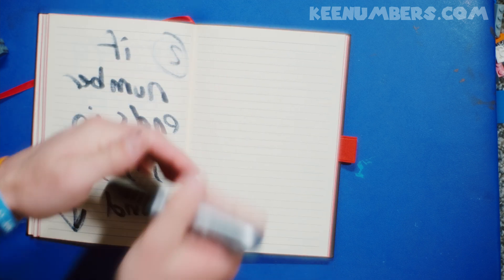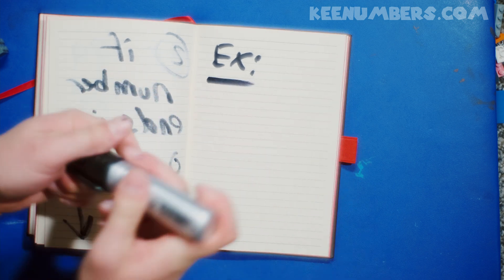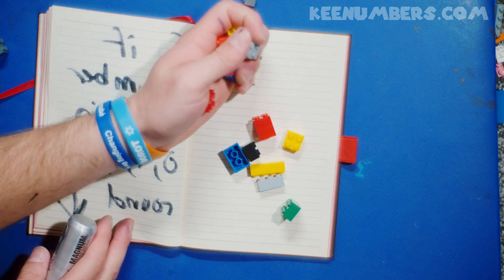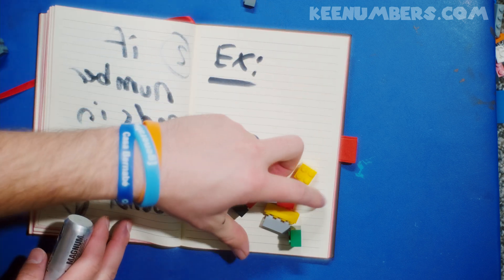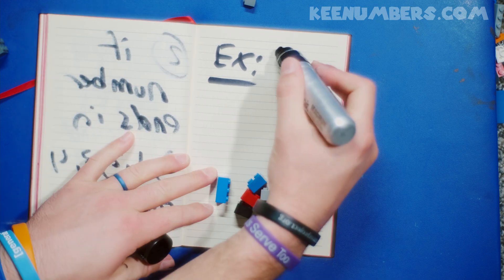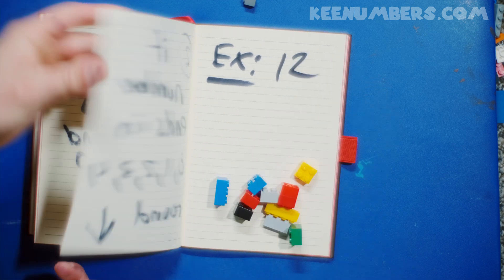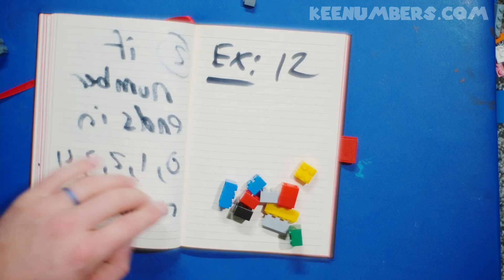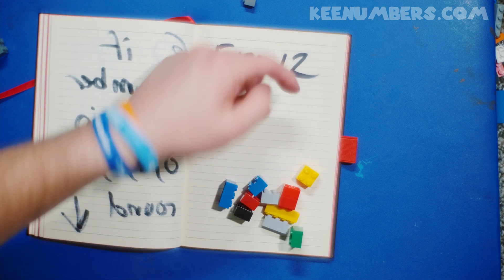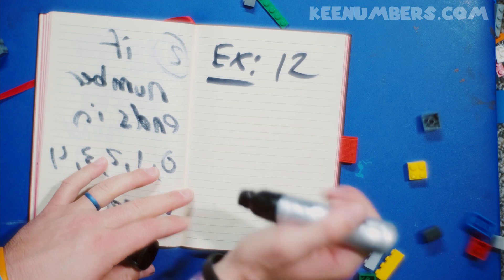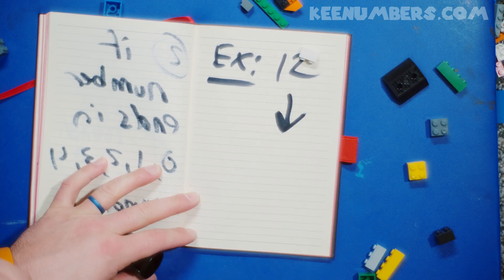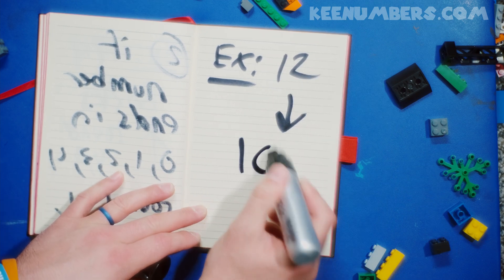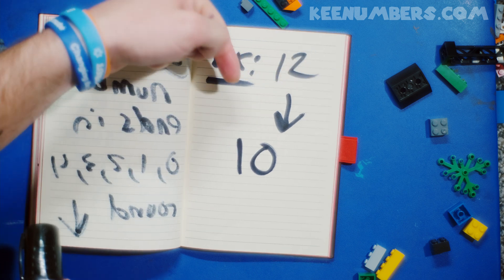Here's an example. If you have twelve bricks, the number ends in two. So the rule says if you're estimating by rounding, you're going to go down to the nearest ten. It's not twenty — you round down. The nearest ten here that you round down to is just ten, because it ends in two. So we go down.